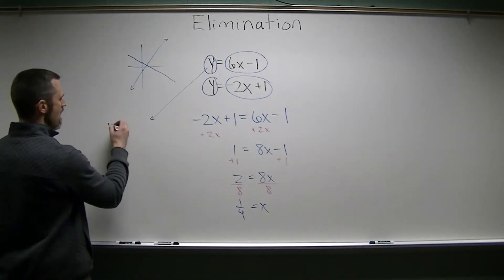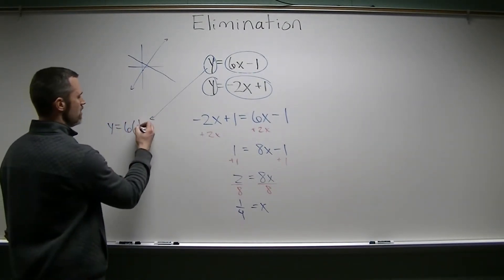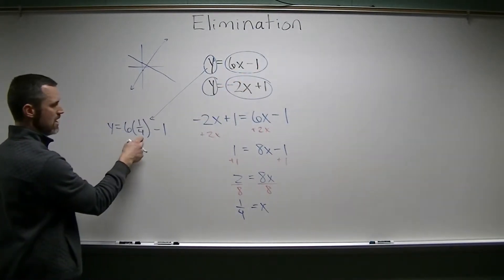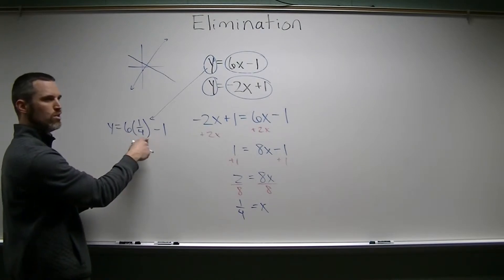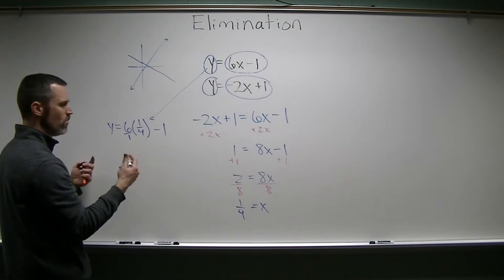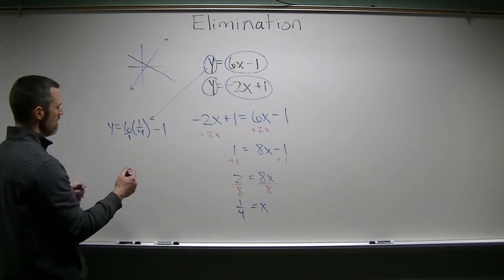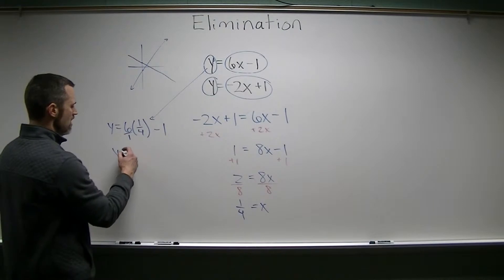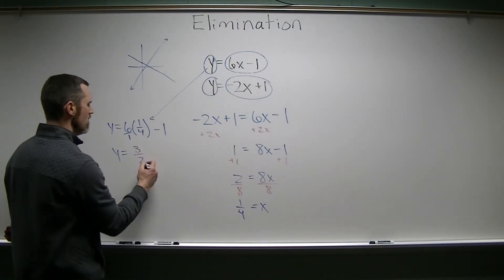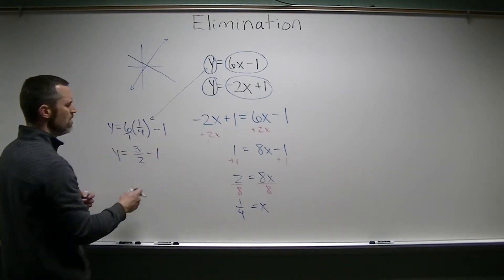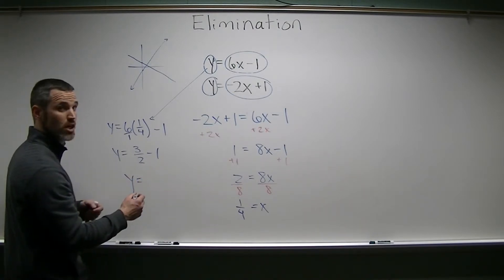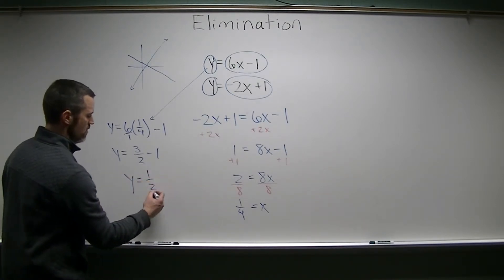So I get y equals 6 multiplied by my x value, which is 1 quarter. And then we have to subtract 1 still, 6x minus 1. 6 over 4, that's really 1 and a half, so 1.5. I'm going to use 1.5 here, so I get y equals, you know what? No, we'll do 3 halves, it'll be fun. So that's 1.5, 3 halves, same thing, minus 1. 1 is the same thing as 2 over 2. Check your fractions. We get y equals 1 half.